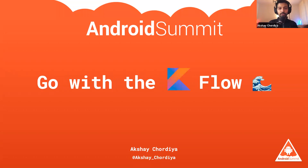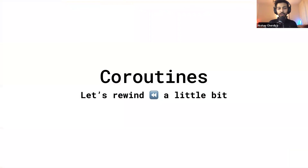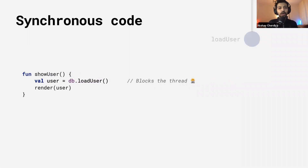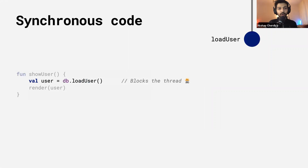Today we're going to talk about something many people are excited about: Kotlin Flow. Before we dive into Kotlin Flow, let's rewind and look at what Kotlin gave us — coroutines. Coroutines simplify asynchronous programming in general, especially on Android. Here is an example of a synchronous function called 'show user', which internally loads the user from the database. When 'load user' is called, it blocks the current thread and waits until the user is loaded, which is bad because the whole UI is frozen, making the user unhappy.